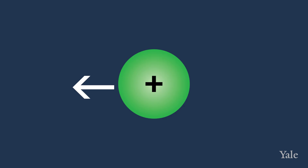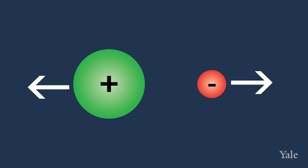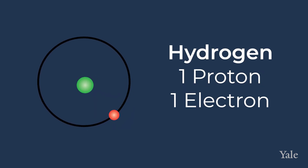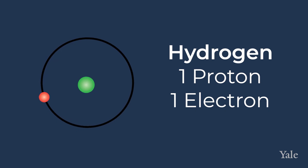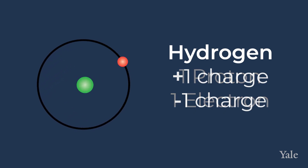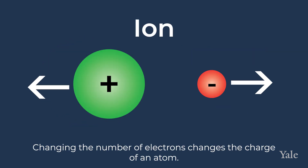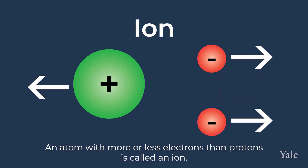Electrons are less densely dispersed around the nucleus. A positive proton has a charge of equal magnitude to a negative electron. So when the number of protons is equal to the number of electrons, the atom is neutral — the charges are of opposite sign and cancel. If the number of protons and electrons becomes unequal, then the atom becomes a positively or negatively charged ion.